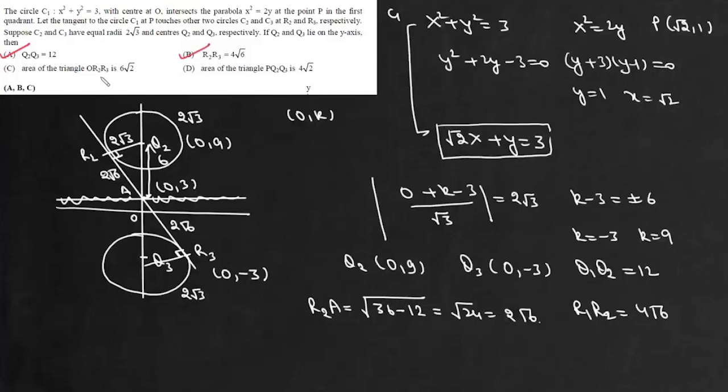Now C is the area of triangle OR₂R₃. We already have the base, so R₂R₃ is 4√6. Now we can find perpendicular distance d, which will be the perpendicular distance from origin to this line. So there will be 3/√3, which is simply √3. So area of this triangle will be ½ × base 4√6 × altitude √3 = 6√2. That means option C is also correct.